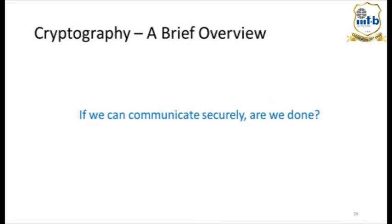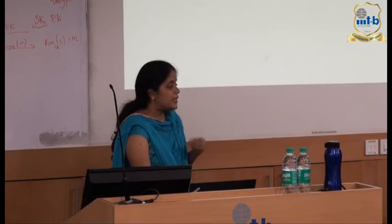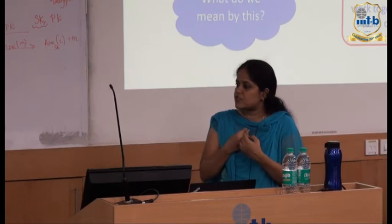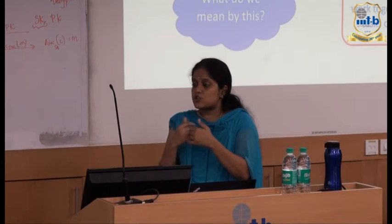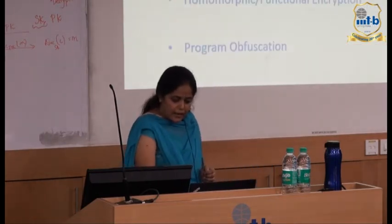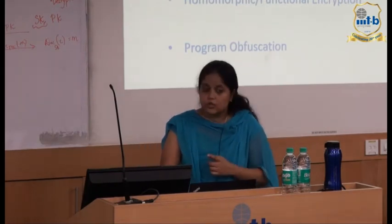With all this work on encryption, people knew how to communicate securely. But then they asked: are we done? The real goal in today's world is not just secure communication — it's secure computation. Mutually untrusting parties want to compute on shared data. You could have inputs, someone across the room could have inputs, and even without having met, you should be able to compute joint functions of your shared inputs. To address this, I'll talk about zero-knowledge proofs and then get to secure computation.